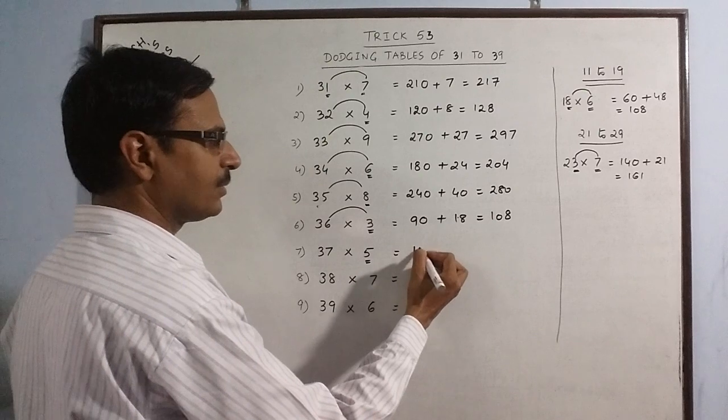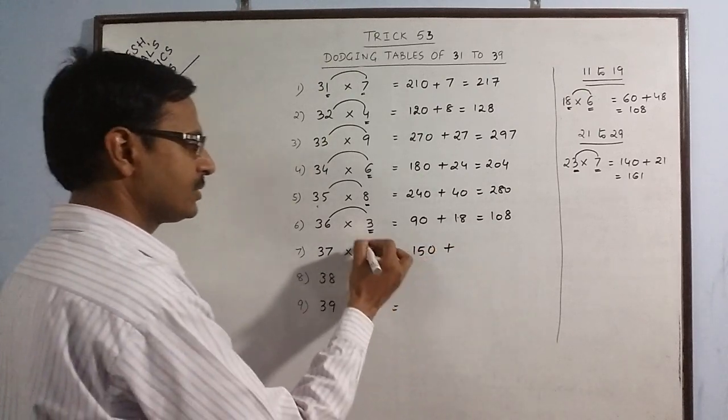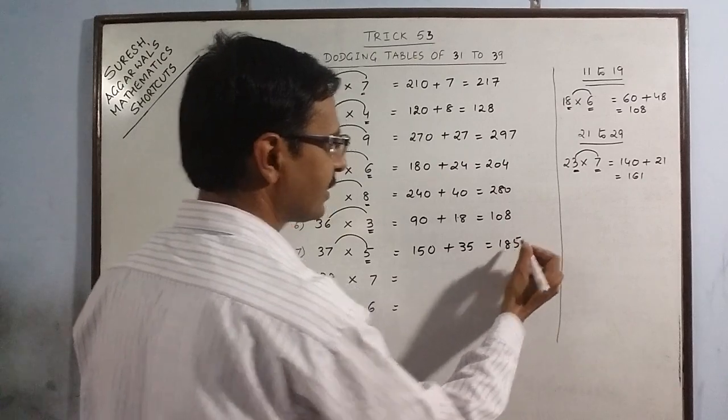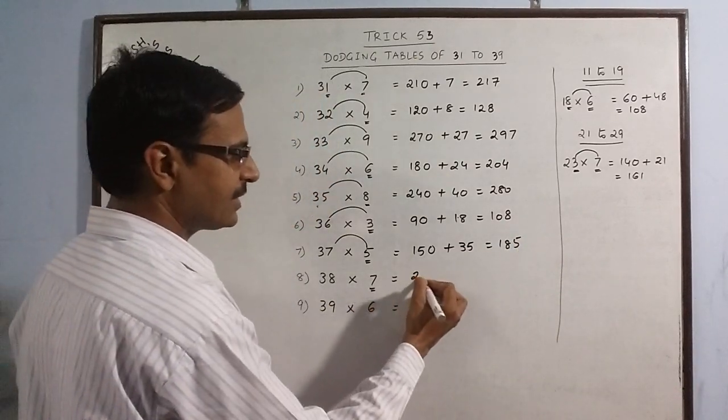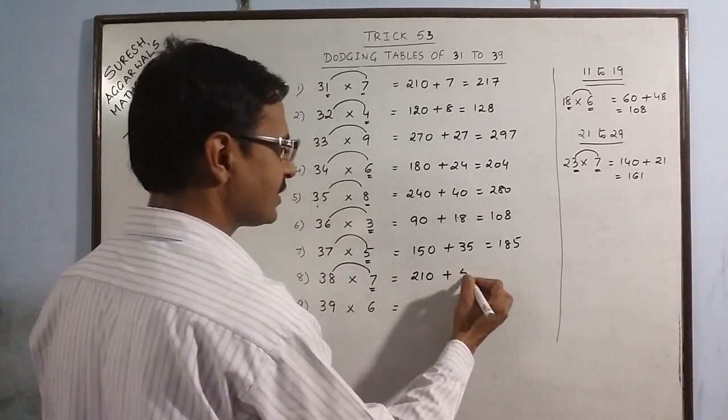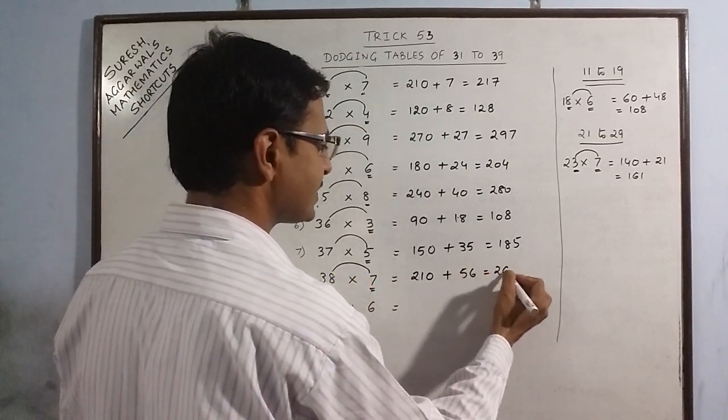37 into 5: triple of 5 is 15, put a 0, 7 fives are 35, add the two: 185 is the final result. 38 into 7: triple of 7 is 21, put a 0, 7 eights are 56, add the two: 266 is the result.